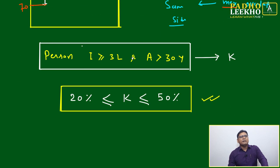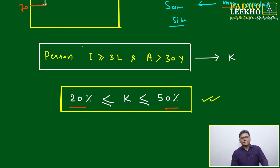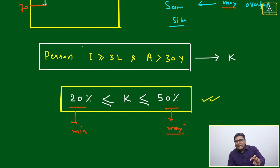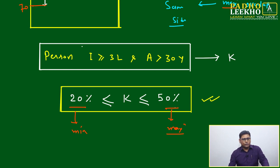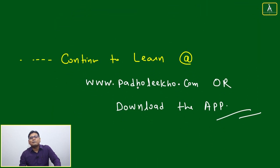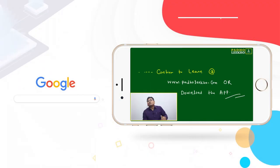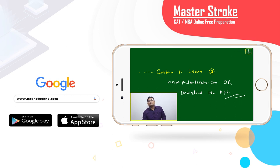For a person with income more than or equal to 3 lakhs and age more than 30 years, the percentage will range from 20% minimum to 50% maximum. This combination of concepts — splitting one number into two or more ways — makes for very interesting and repetitive CAT case lets. To learn more techniques and tools, continue learning at www.parolico.com or download the app. Thank you.